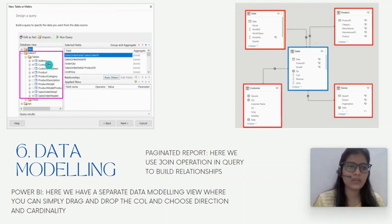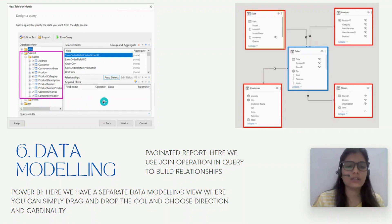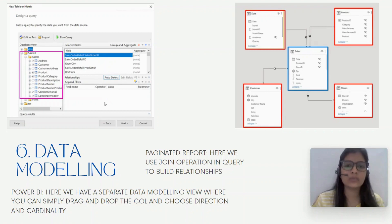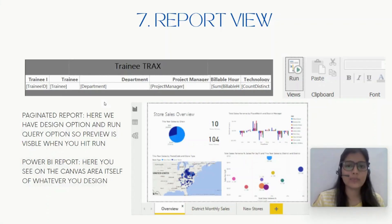In the case of a paginated report, they have a different view — you design a query here, and you have tables with all the columns listed, and you can choose which columns to use for your final dataset. You can set up relationships, and at the end a SQL query is generated which determines how the tables are connected using joins, for example, an inner join on a particular column.